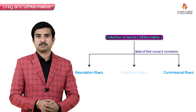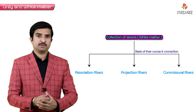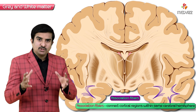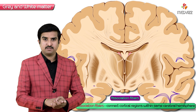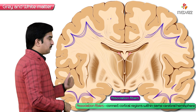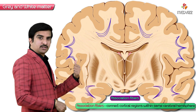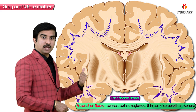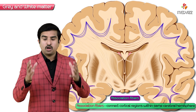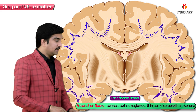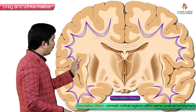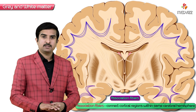Association fibers connect the cortical regions within the same cerebral hemisphere of the brain.